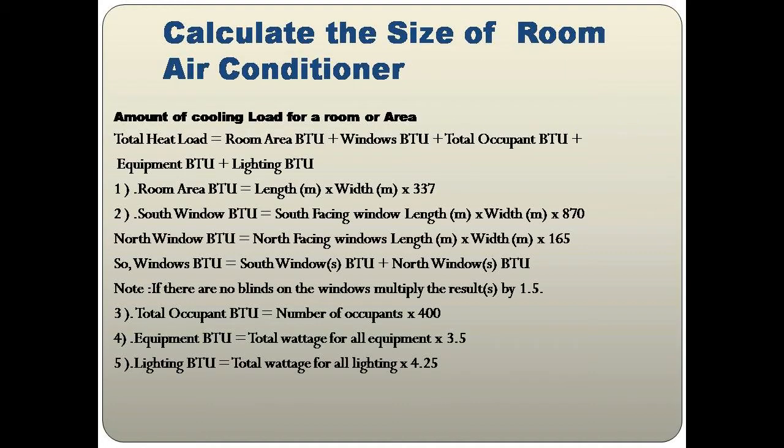For the calculation of the size of a room air conditioner, several parameters are involved. We need to calculate the total heat load in BTUs, then divide by 12,000 to get how many tons of refrigeration we need. As you can see on the screen, the formula is: Total Heat Load = Room Area BTU + Windows BTU + Total Occupants BTU + Equipment BTU + Lighting BTU.